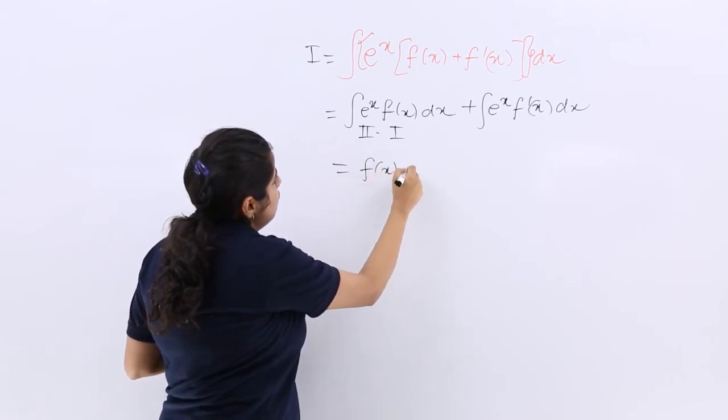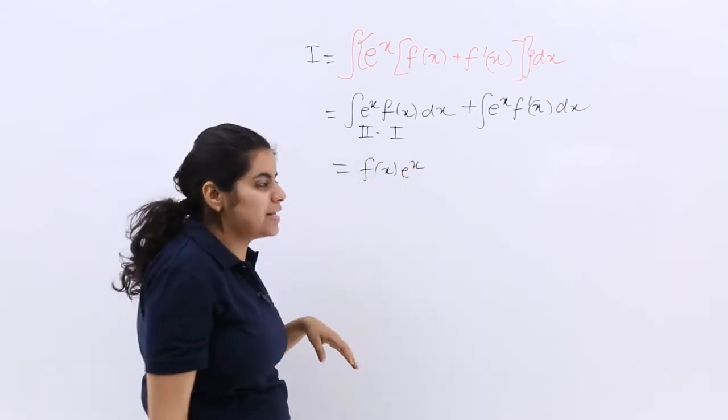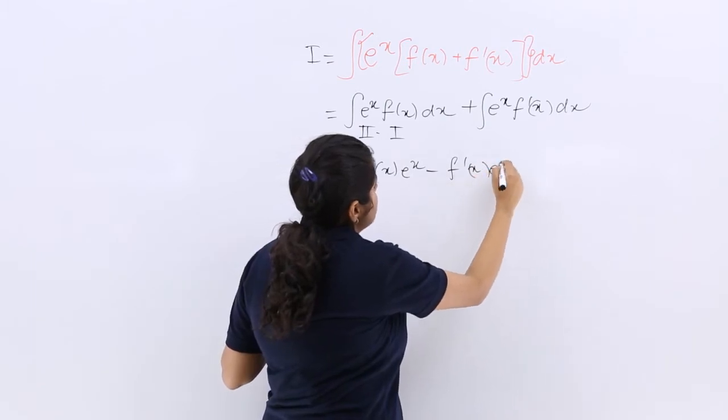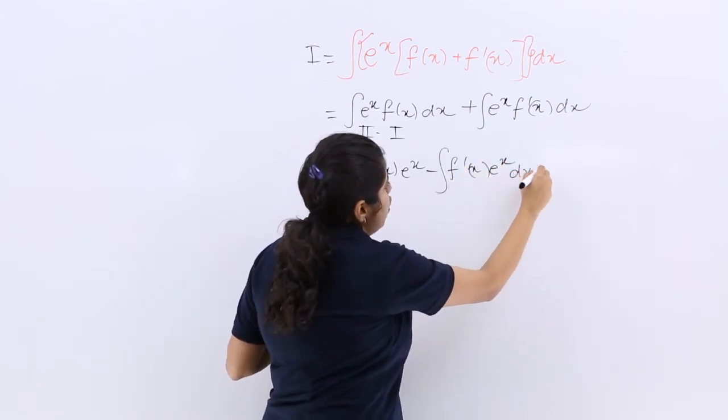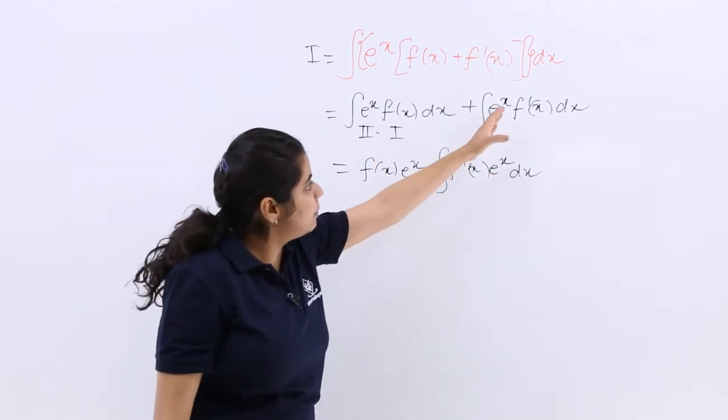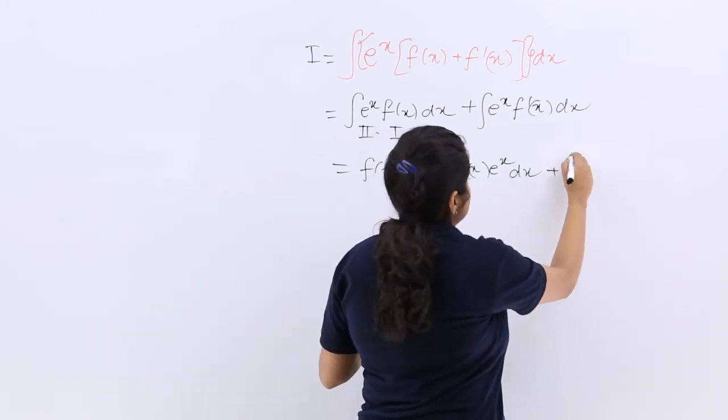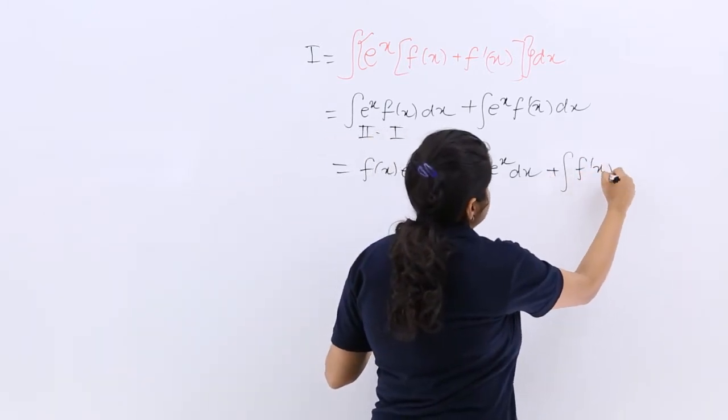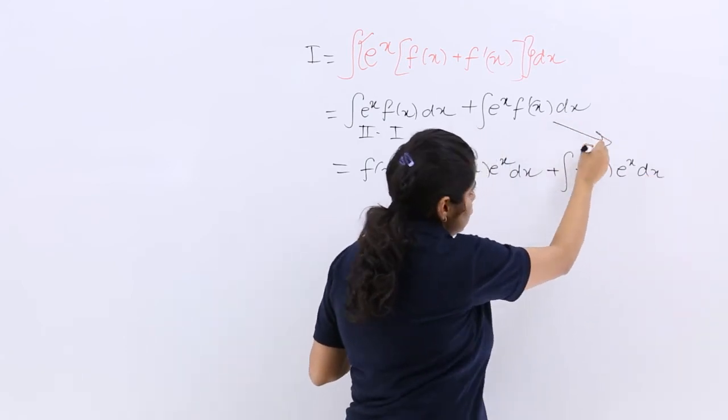First function into integration of second, which gives me the same thing, minus differentiation of first into integration of second, whole integration. Now let me copy the next thing. The next thing is simply again f'(x) multiply e raised to the power x dx.